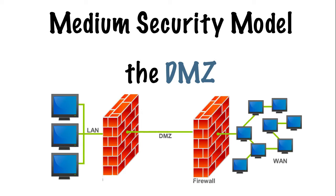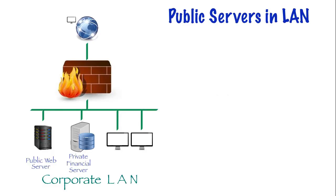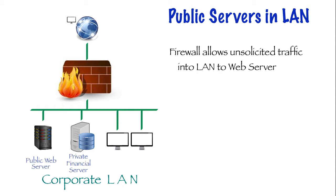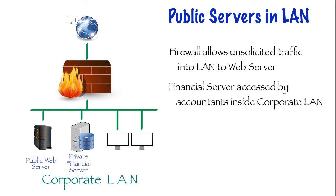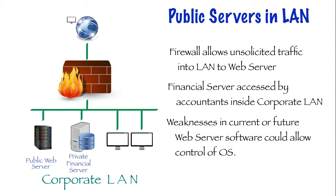First let's discuss why this area is necessary. In our example we have a public web server that's designed to be accessed by the general public through the internet. We also have the company's financial database server and the corporate PCs. The financial department uses the PCs to access financial records kept on the server. Because many software programs contain vulnerabilities, it's possible that a bug in the web server software could cause a remote user to gain control of the web server. Once the web server is compromised, an attack on the corporate LAN can be launched from inside the LAN itself, making it much easier to gain access to private information kept on the corporate servers and PCs.